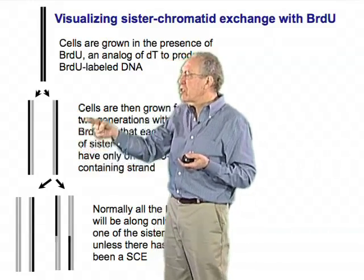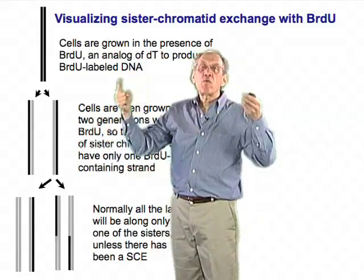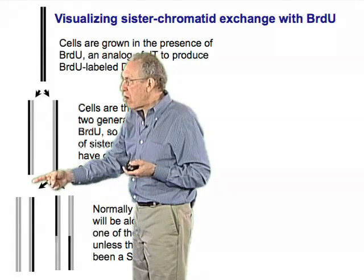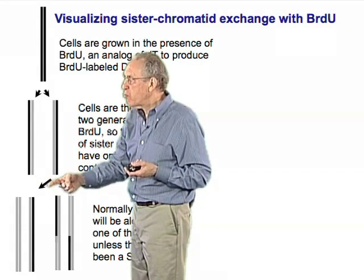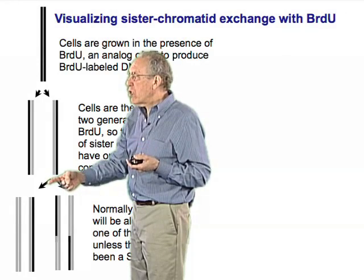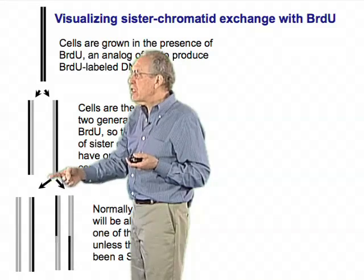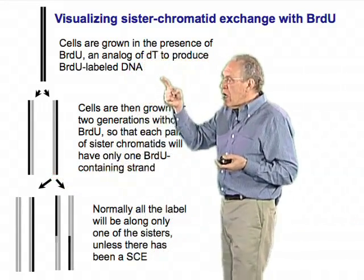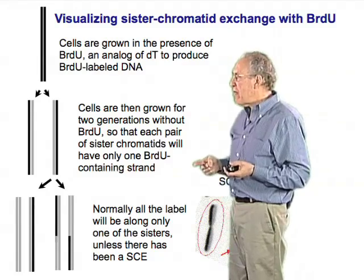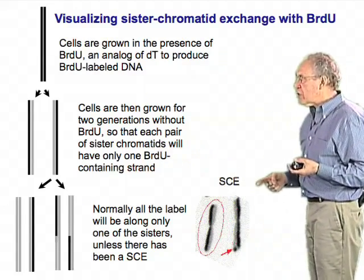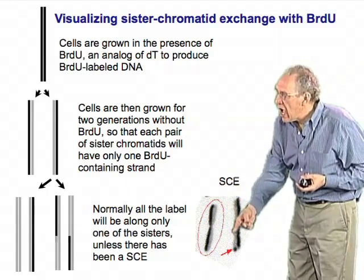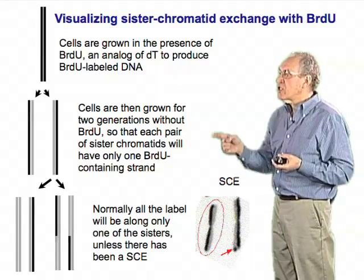one ends up with semi-conservative replication, so one strand has bromodeoxyuridine on it and the other strand has deoxythymidine wherever there are T's in the structure. If you then allow this to replicate again in a second division, now only one of the four strands of the products of this replication is going to have bromodeoxyuridine associated with it. If there's no crossing over associated with this process, one ends up with a molecule that has a single line of bromodeoxyuridine along the replicated chromosome, as shown here.